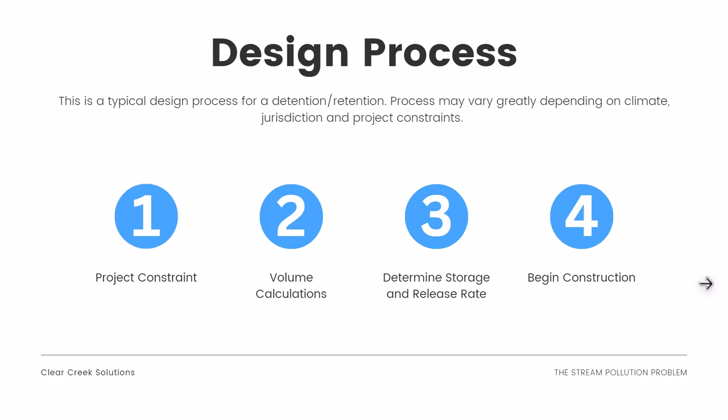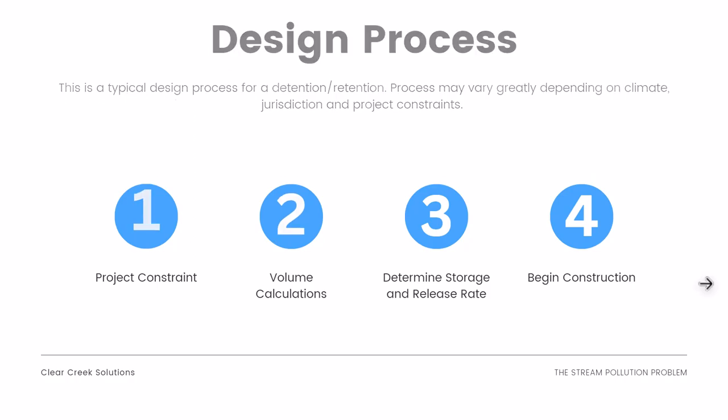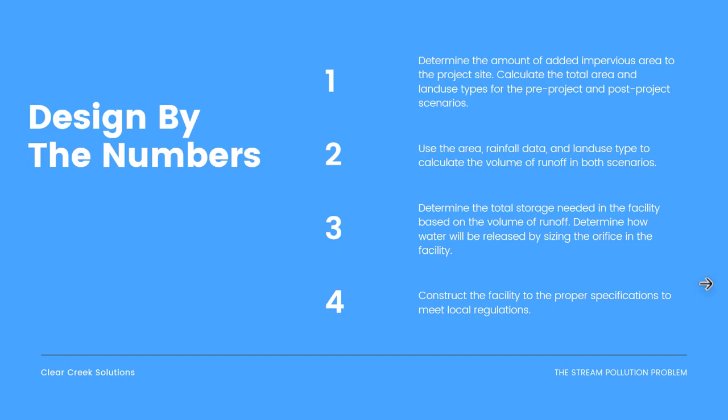Second is volume calculations — how much additional water is going to run off of that project site and how much are you going to have to mitigate? You need to determine storage and the release rate of that water back into the natural environment via some form of an outlet structure, then begin construction to the specs determined for the project site. Specifically: determine the amount of added impervious area, calculate total area and land use types for pre-project and post-project scenarios, use available rainfall data to calculate the volume of runoff in both scenarios, determine the total storage needed, size the orifice or outlet structure, and construct the facility to meet local regulations.